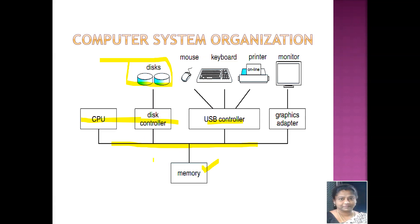When the computer is turned on, booting happens. The bootstrap program must locate the operating system kernel and load it into memory. Whenever a device is switched on, the OS has to be loaded into the main memory — this is taken care of by the bootstrap program. Once the kernel of the OS is loaded and starts executing, it can start providing services to the system and its users, and the system is ready for usage. This is the basic organization of any computer system.